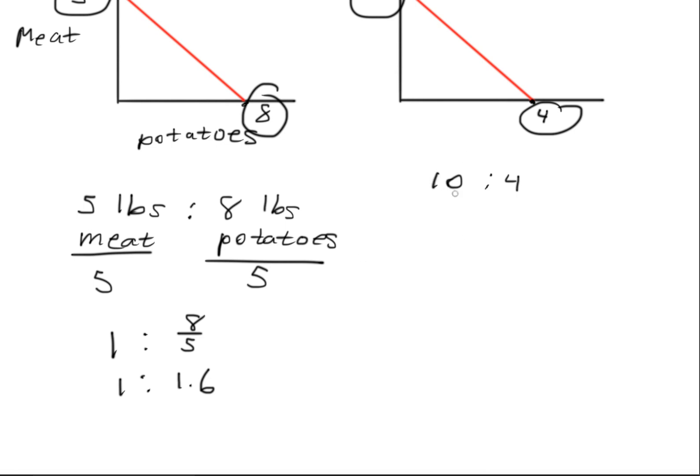Over here, we do the same process. We're going to cancel out the meat by dividing by 10 on both sides. Just a reminder that if you divided this part right here, you have to do the same thing over here. So we get 1 and we get 0.4.